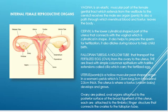The uterus, known as the womb in layman's terms, is a hollow muscular pear-shaped organ in females which is about 7.5 centimeters long, 5 centimeters broad, and about 2.5 centimeters thick. The uterus helps to house the fetus — the unborn baby — until it is fully developed and ready to leave the body.